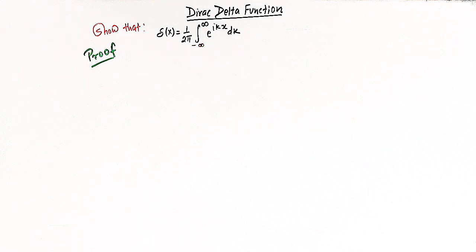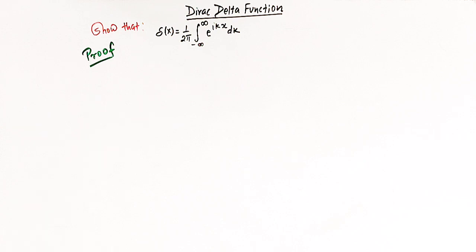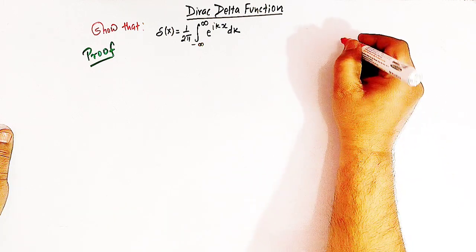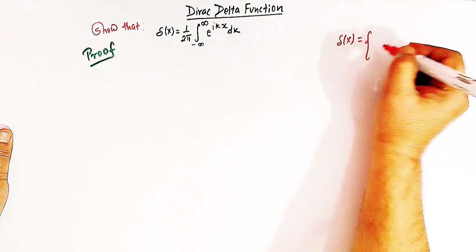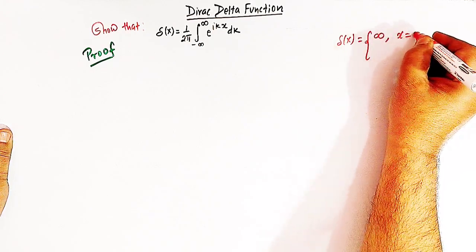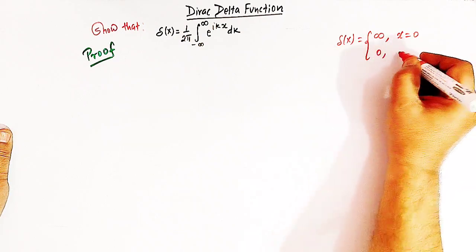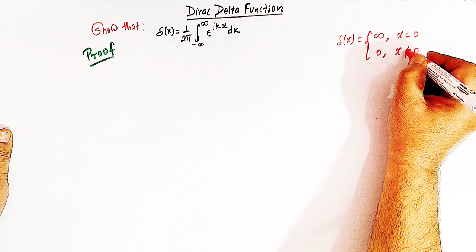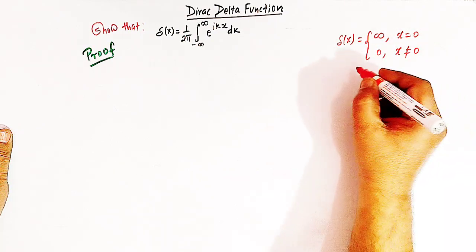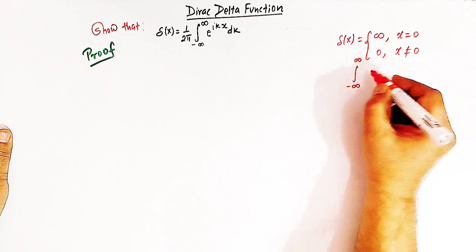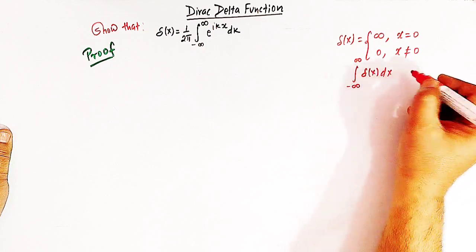In our previous videos and lectures we have already seen different representations of the direct delta function. So let us start. We have already discussed the definition of delta function in previous videos, but just for the sake of revision: delta of x is equal to infinity for x equal to 0, and delta of x is equal to 0 for all x not equal to 0. We can also define the delta function by the integral from minus infinity to infinity of delta of x dx, equal to 1.